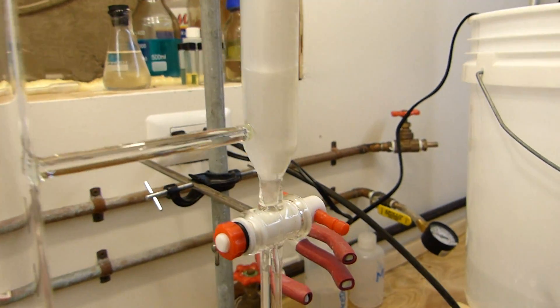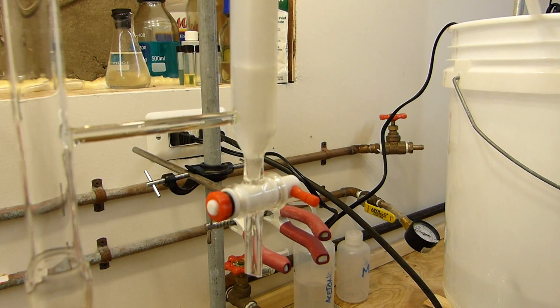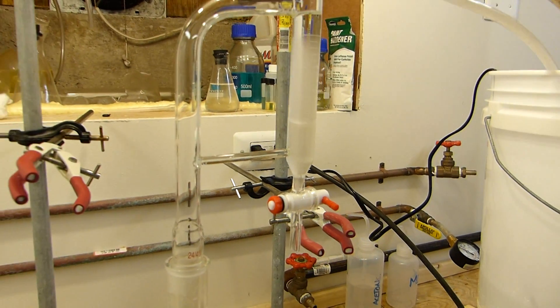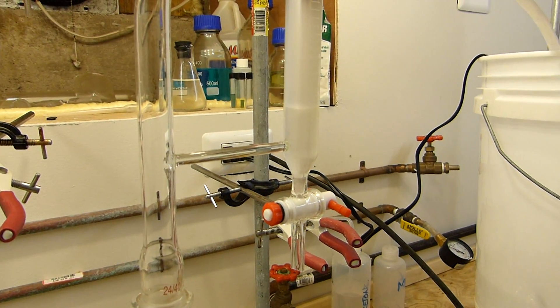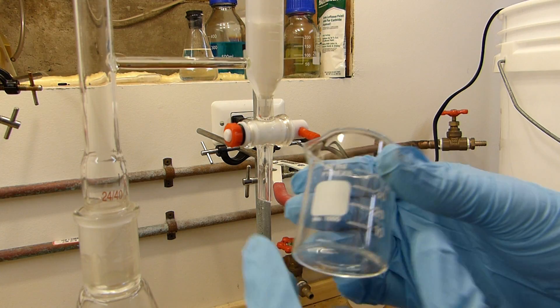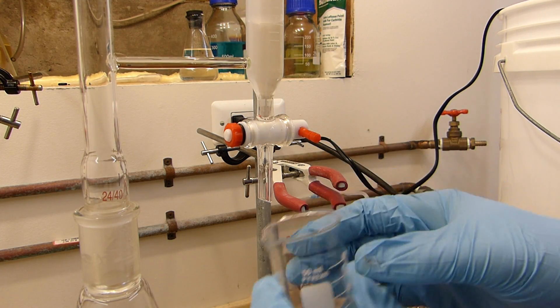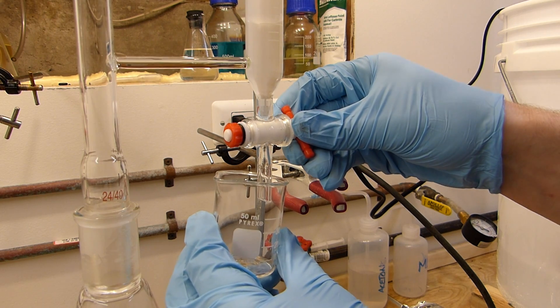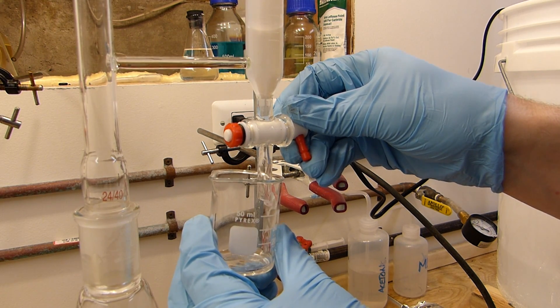And what we can do now is, we'll remove this water from the trap, and we'll weigh it, and then let's figure out whether we've completely dried the oxalic acid or not. I've tared this beaker on the scale, and I'll just drain the water into it, and then we can weigh the whole thing, and we'll see exactly how much water we got.